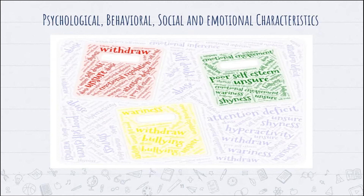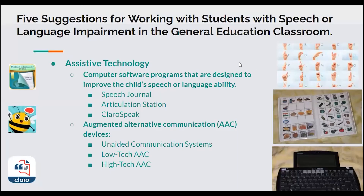If we can use early intervention to come in and boost their self-esteem, we will see the previous behaviors probably decrease. Here are five suggestions for working with students with speech or language impairment in the general education classroom. We're talking about two things: assistive technology on this slide, and on the next slide, instructional strategies. In terms of assistive technology, we're talking about computer software programs and augmentative and alternative communication, known as AAC.